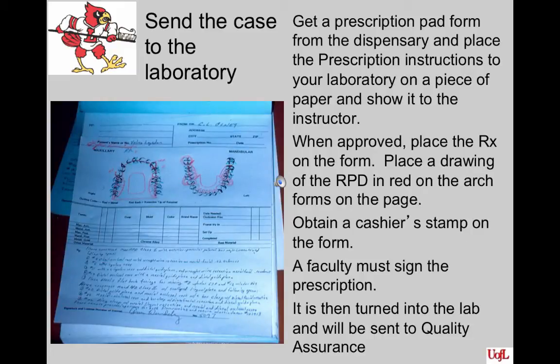Get a prescription pad form from the dispensary and place the prescription instructions to your laboratory on a plain piece of paper first to show an instructor. When he approves what you have written, go ahead and place the prescription on the form. Place a drawing of the RPDs in red on the arch forms at the top of the page. Obtain a cashier stamp on this form and then have your faculty member sign the prescription. It is then turned into the lab and will be sent to quality assurance. Things like your mounting, designs, and rest preps will be checked before the case is sent out to the laboratory to make a framework.